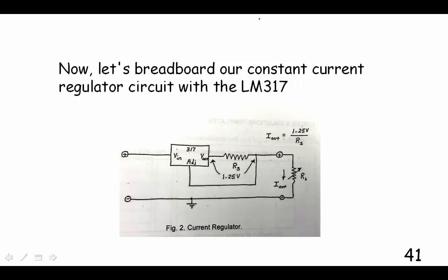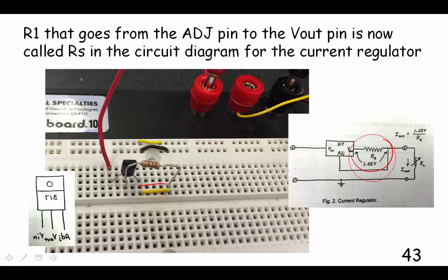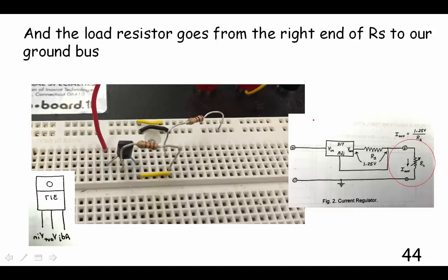Now let's breadboard the constant current regulator circuit for the LM317. As before, we've got the LM317 turned around, so it's flat side is going that way, so we can have our Vin pin on the left. I've run a little jumper and connected this R. Now our RS, it used to be called R1. I'm not going to go back there, but it was R1. Now this is the same thing as R1, but now we're calling it RS in the current regulator. It's coming around and connecting to the Vout just like it's supposed to right here. And now we have to connect our load from this point right here to the ground bus, and there is the load resistor.